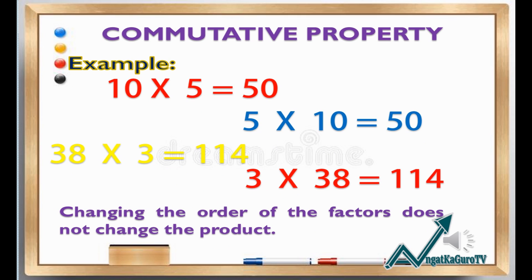Another example of the commutative property: 10 times 5 equals 50, and 5 times 10 equals 50. 38 times 3 equals 114, and 3 times 38 equals 114. In the commutative property of multiplication, changing the order of the factors does not change the product.